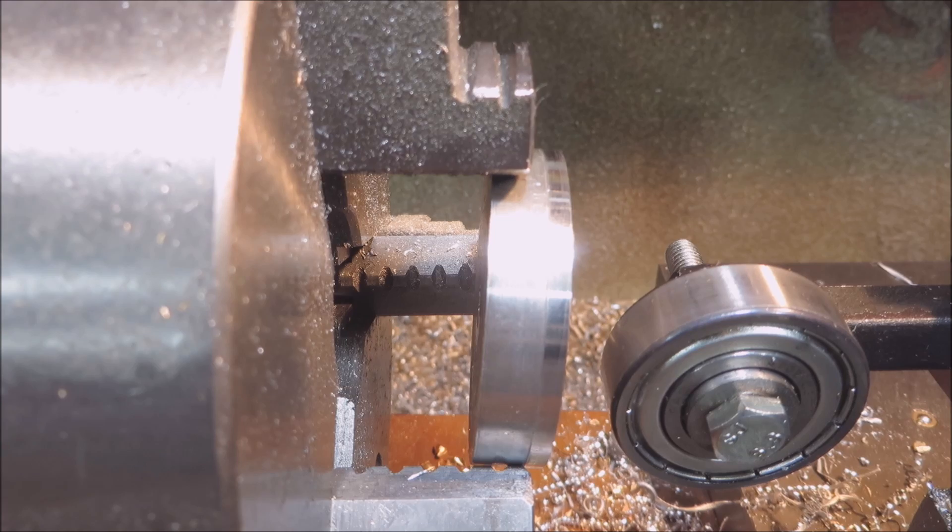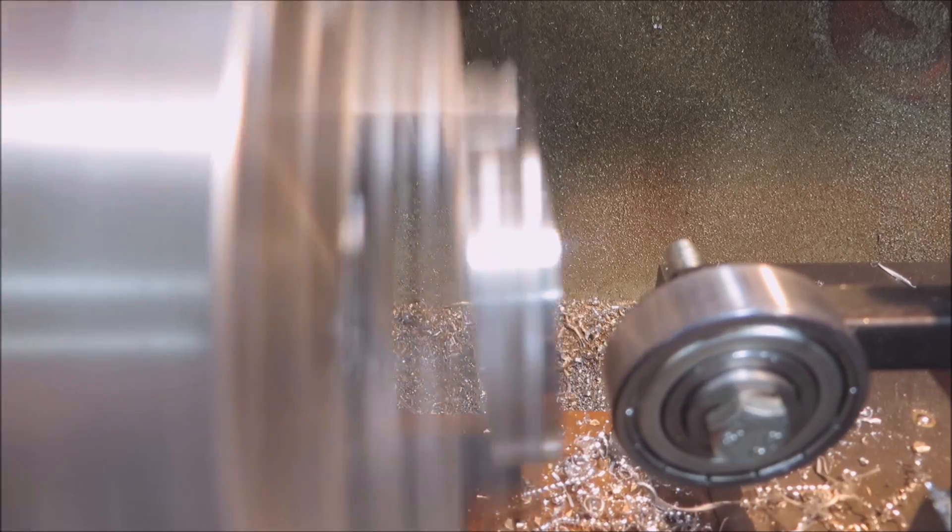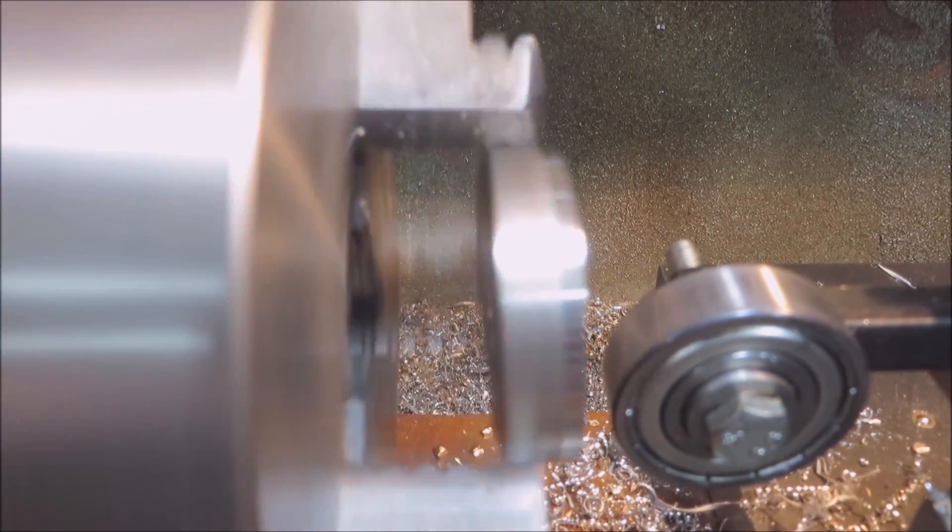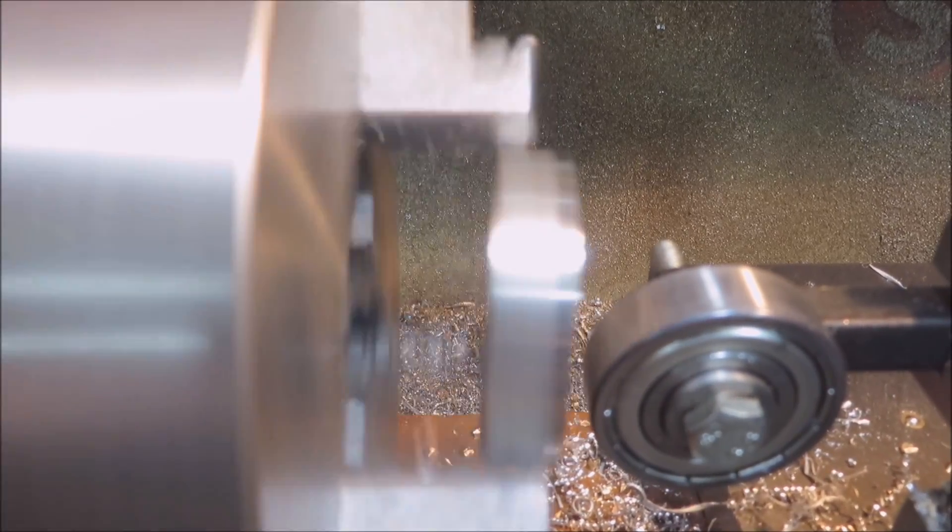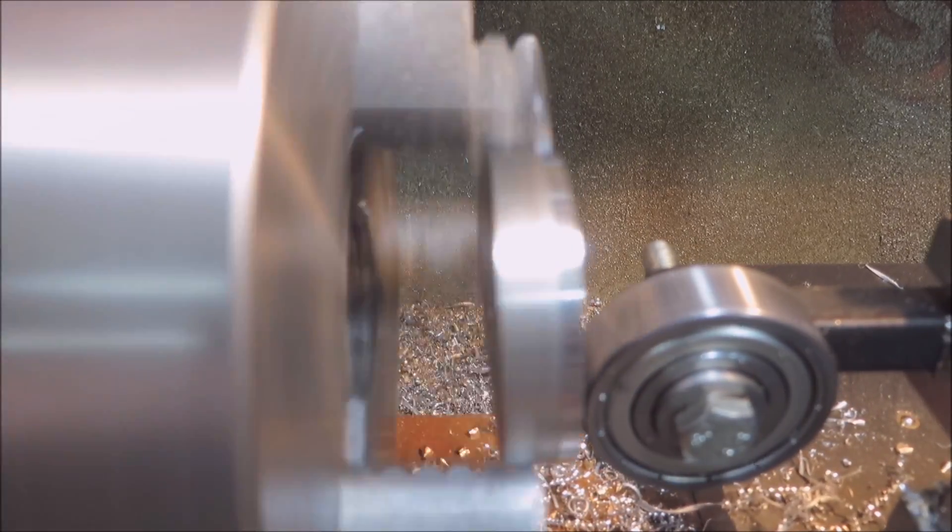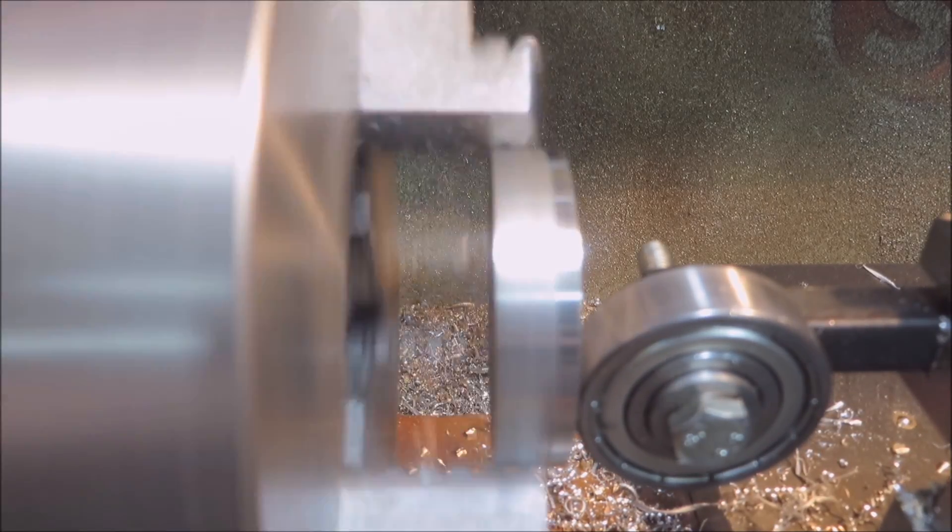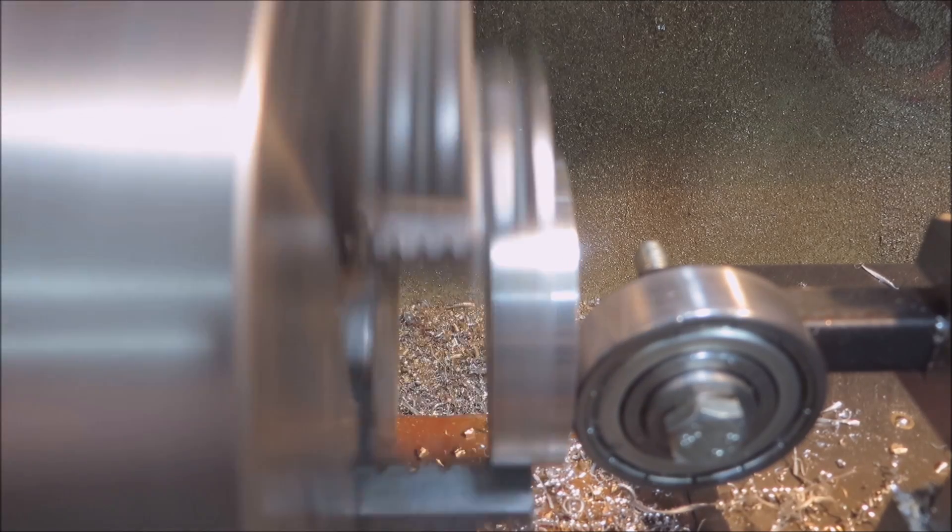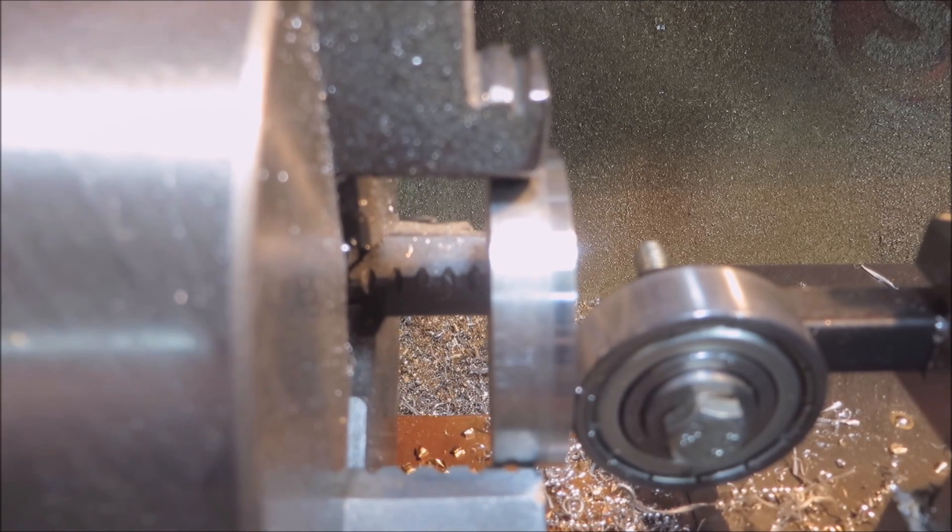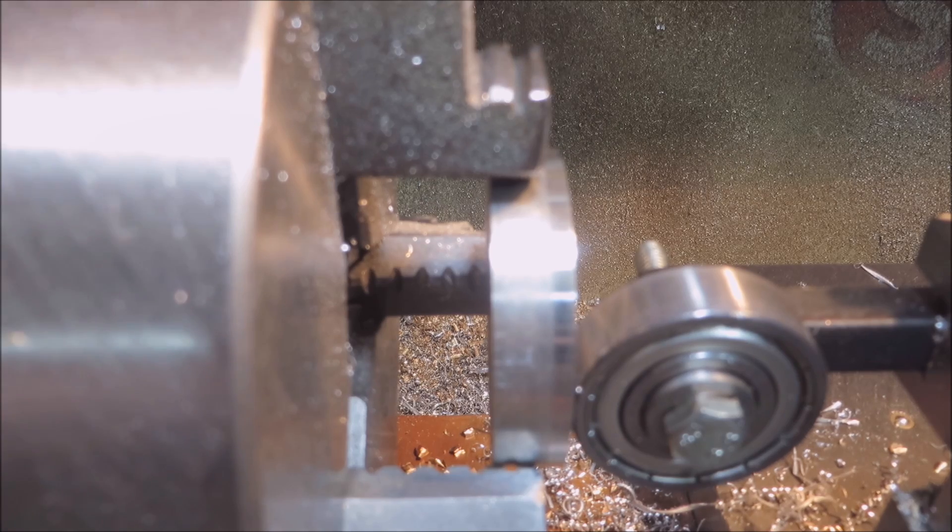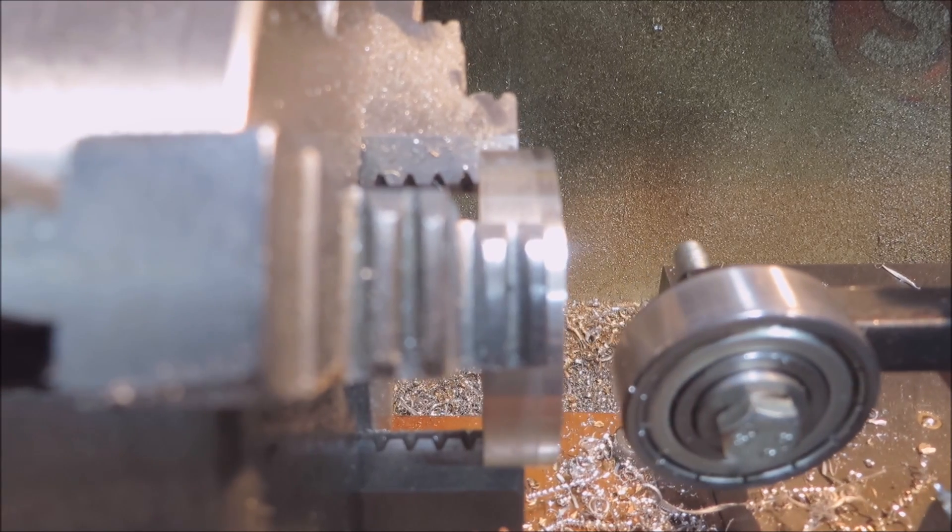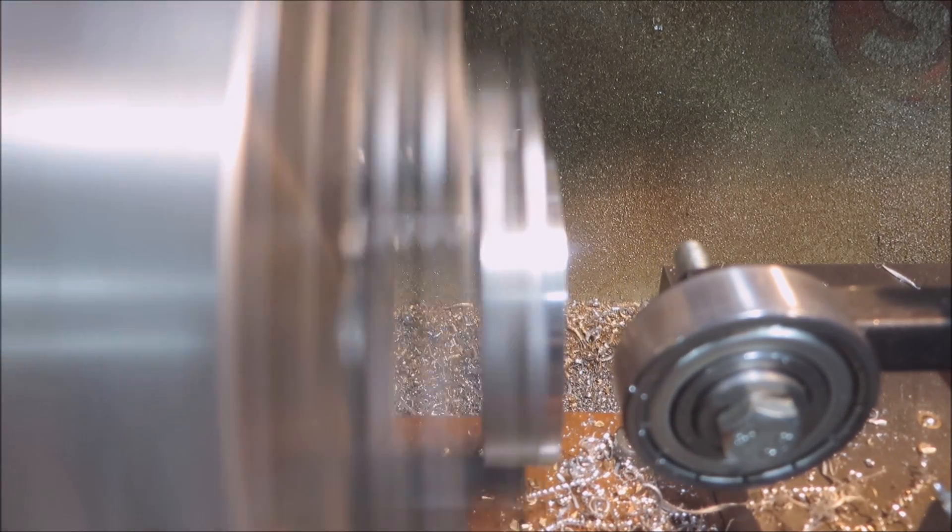I'll start the lathe up now and I'll just show you how simple it is. Just move the ball bearing and race onto the outer part slowly, just hold it on now, tighten the chuck key, back that off, and there we go running true.